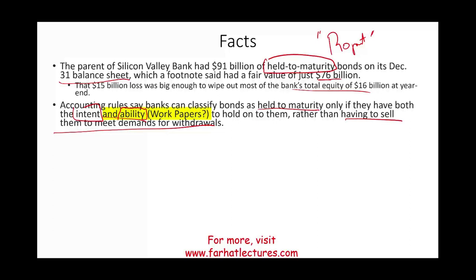If the auditor knew or suspected that SVB could not hold the bonds to maturity, KPMG would have had to predict there would be a bank run. Under those circumstances, SVB cannot hold those bonds as held to maturity. But was that issue raised? That is the question.